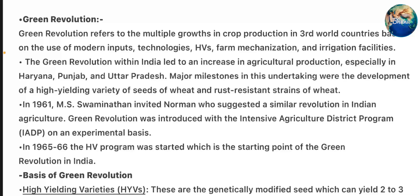In 1961, M.S. Swaminathan worked with Norman Borlaug, who suggested a similar revolution in Indian agriculture. Green Revolution was introduced with the Intensive Agriculture District Program (IADP) on an experimental basis. In 1965-66, the High-Yielding Variety Program was started, which is considered the starting point of the Green Revolution in India.